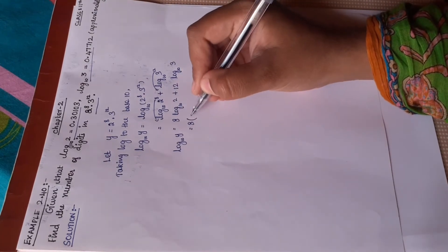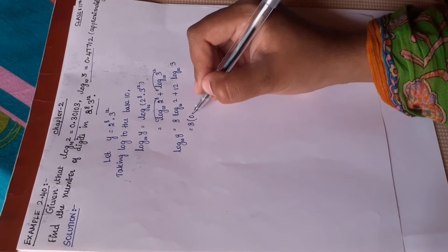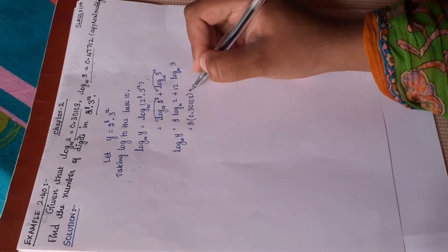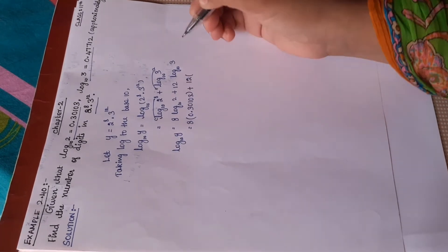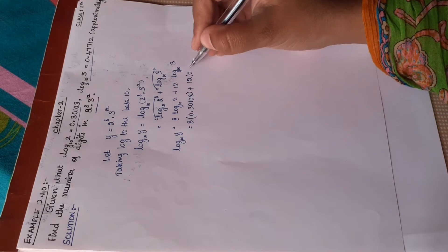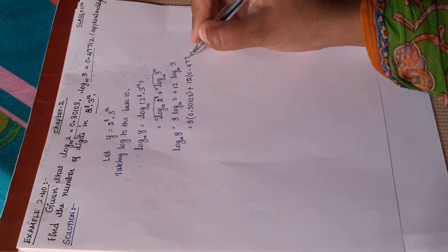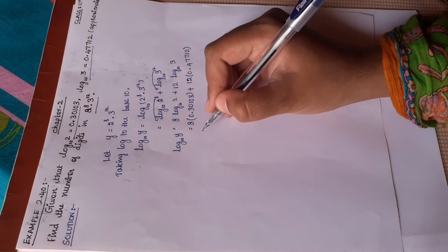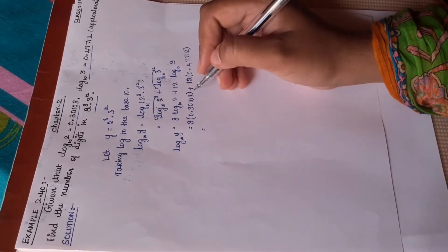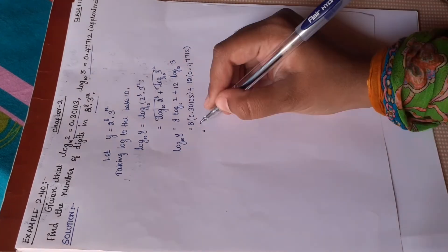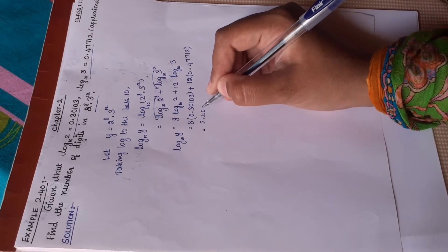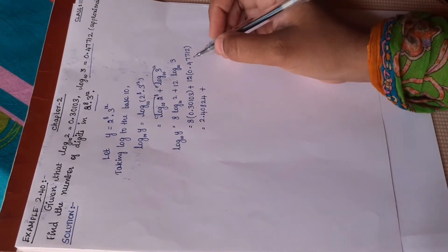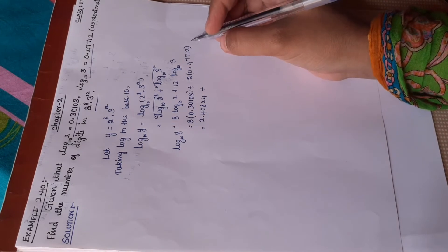Now substituting the values from the question: log 2 to the base 10 has value 0.30103, so we get 8 into 0.30103, plus 12 into log 3 to the base 10, which is 0.47712. Multiplying: 8 into 0.30103 gives 2.40824.